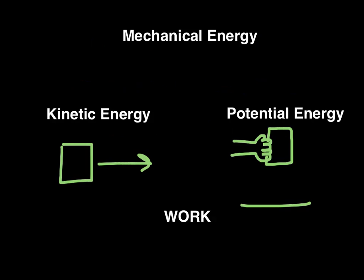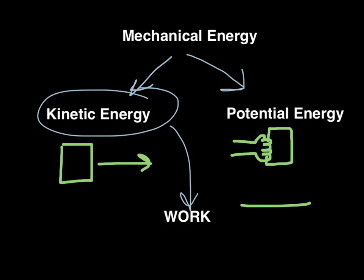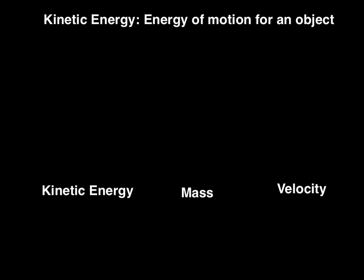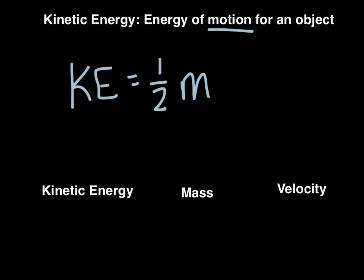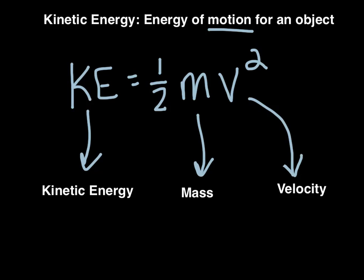The last thing we discussed in class was mechanical energy, and we stated that there are two types of mechanical energy: kinetic energy and potential energy. Today we're going to focus on how to find kinetic energy and connect it back to work. Kinetic energy is the energy of motion for an object, and its equation is KE equals one-half m times v squared, where KE is kinetic energy, m is mass, and v is velocity.